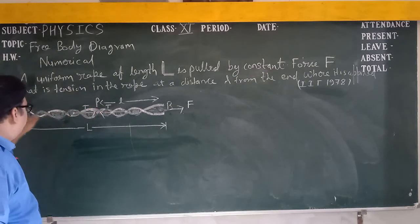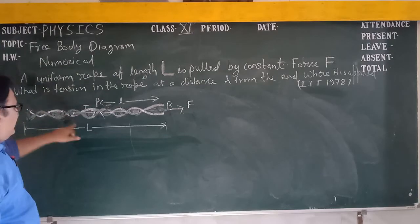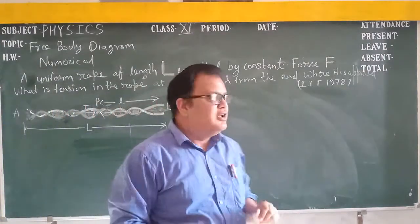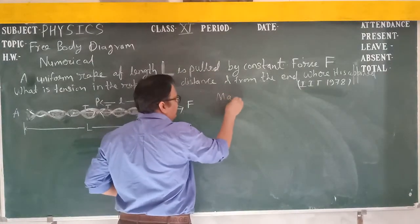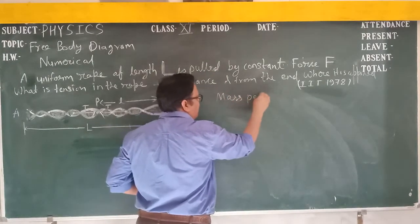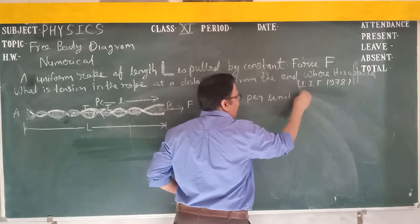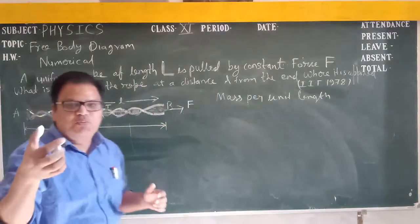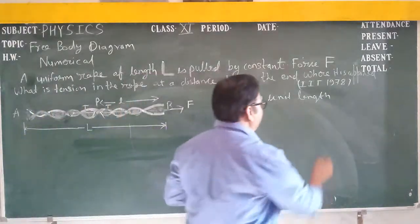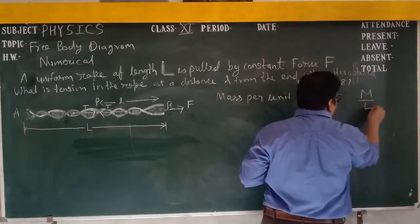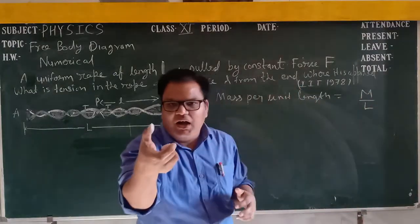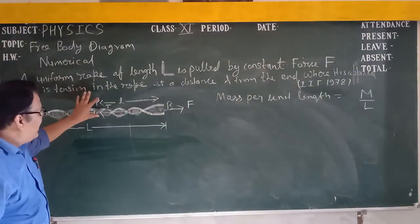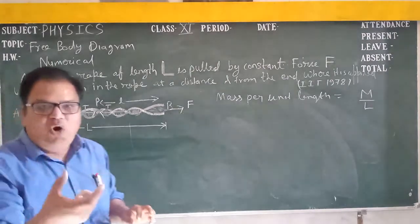We divide the rope into two parts: part PA and part PB. We have to find the mass per unit length. Consider the mass of the rope is M, so mass per unit length equals capital M divided by capital L, because the total length of the rope is capital L.